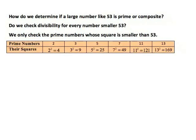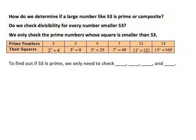In my table, I have a list of the first six prime numbers: two, three, five, seven, eleven, and thirteen. Below that, I have their squares. Two squared is four, three squared is nine, five squared is twenty-five, seven squared is forty-nine, and so on. To find out if 53 is prime, we only need to check primes whose square is smaller than 53: two, three, five, and seven. We don't need to check eleven or thirteen because their squares — 121 and 169 — are well above 53.